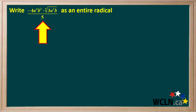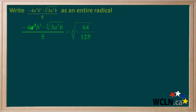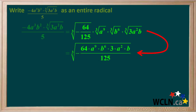The same process can be used for more complex mixed radicals with cube roots. We're asked to write this mixed radical as an entire radical. 4 cubed is 64 and 5 cubed is 125, so negative 4 over 5 can be written as the cube root of negative 64 over 125. a cubed can be written as the cube root of a to the 9th. b squared can be written as the cube root of b to the 6th. The cube root of 3a squared b is already a radical, so it can be written here as is. Now we're left with the product of these 4 cube roots, and we'll combine these to make a single cube root.